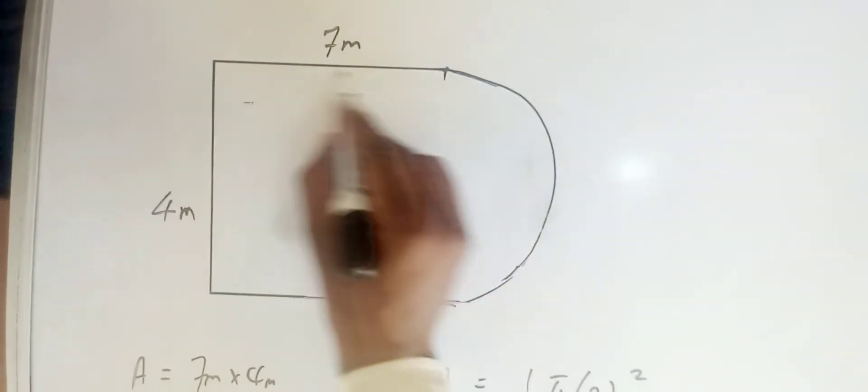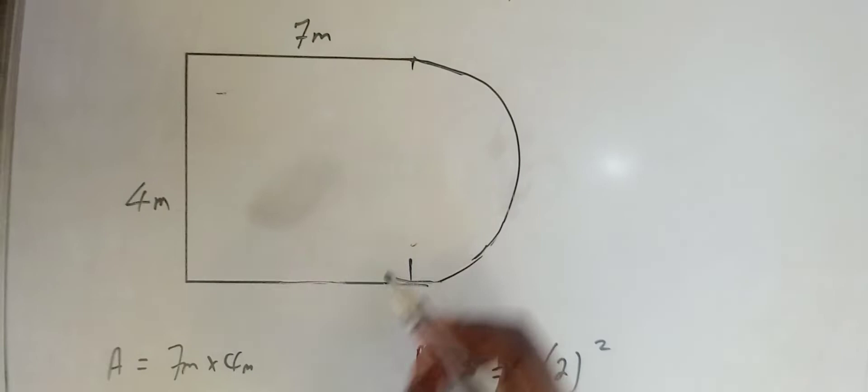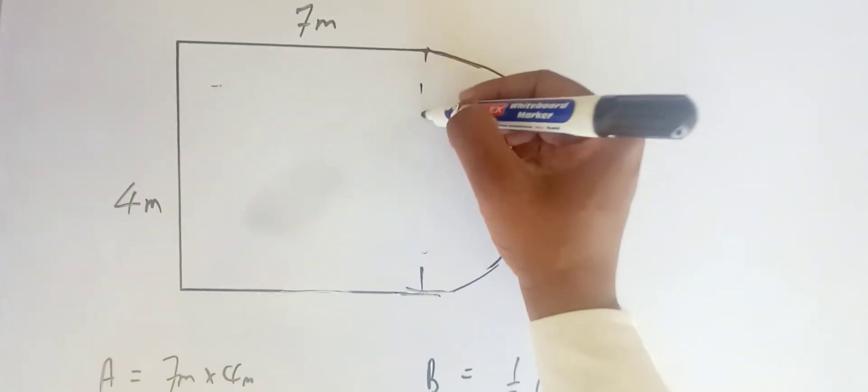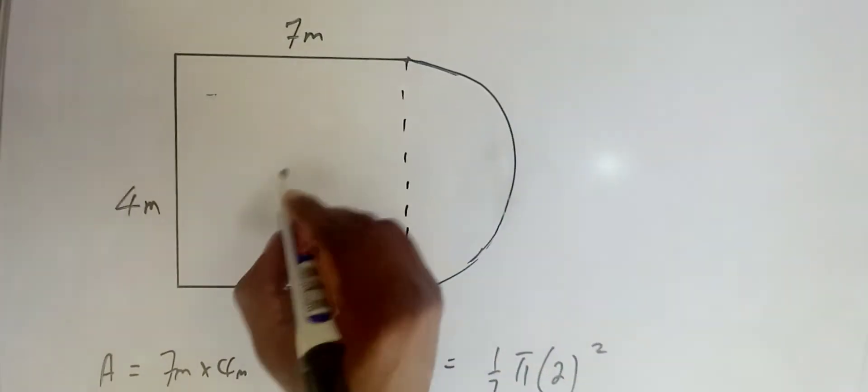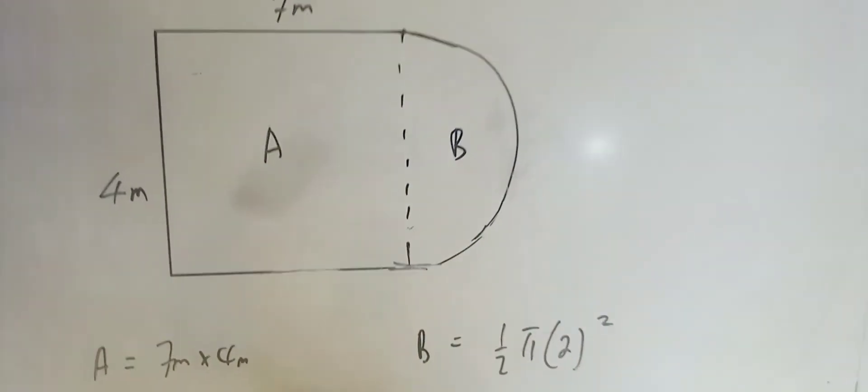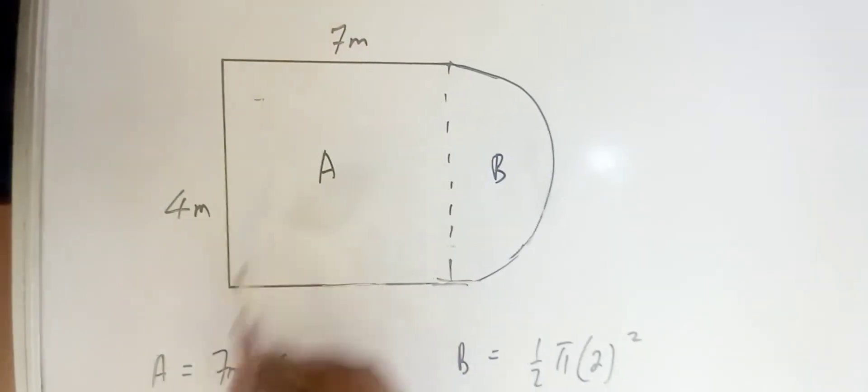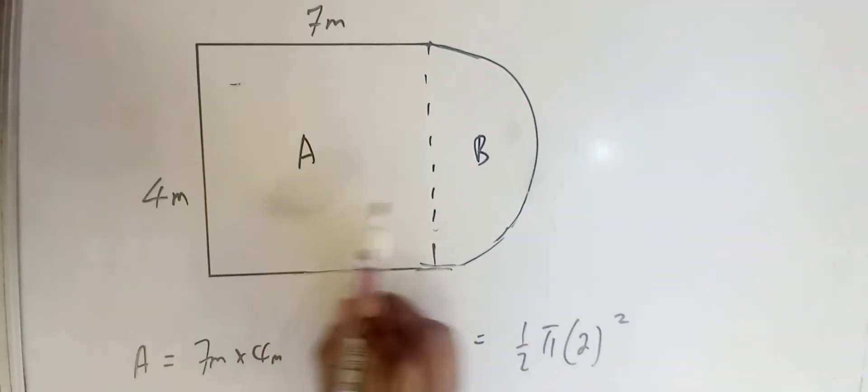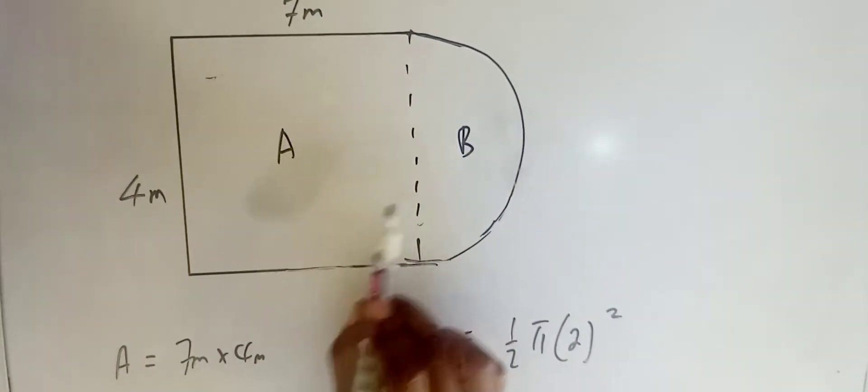You can see that we have a rectangle here. If you draw an imaginary line, you see it can be split into a rectangle and a semicircle. As a result, you end up having to calculate individually the area of each of these shapes.